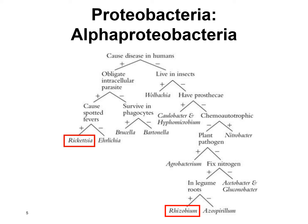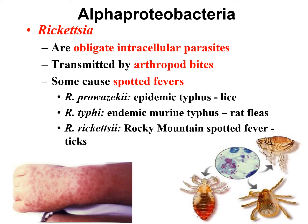Our first group of proteobacteria is in the class alpha proteobacteria, which you don't need to memorize. We're going to look at two of them: Rickettsia and Rhizobium. The rickettsial bacteria are what we call obligate intracellular parasites. Obligate means required, intracellular means inside the cells — so they're required to live inside our cells and can't survive very long outside. Parasites describes that symbiotic relationship where they benefit while our cells are harmed.